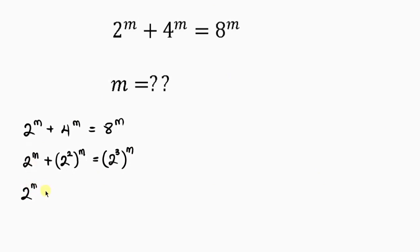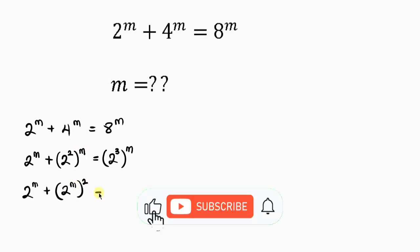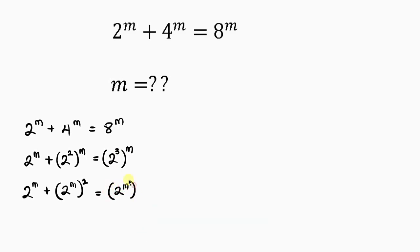Let's write 2 to power m first, plus. According to indices, the powers 2 and m can switch positions, because I want this to look uniform. So this becomes 2 to the power of m, to the power of 2. Notice that 2 and m have switched positions. Equal to 2 to power m, raised to power 3. Now watch — everything has 2 to power m.